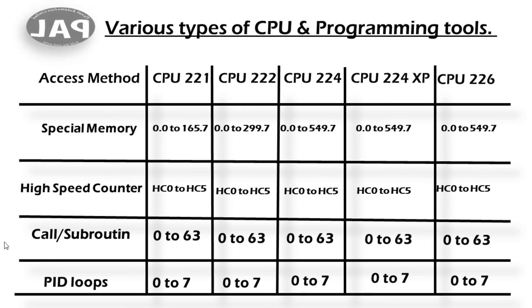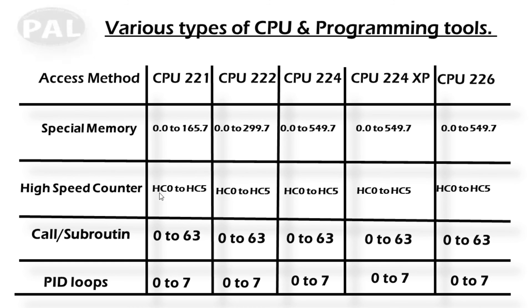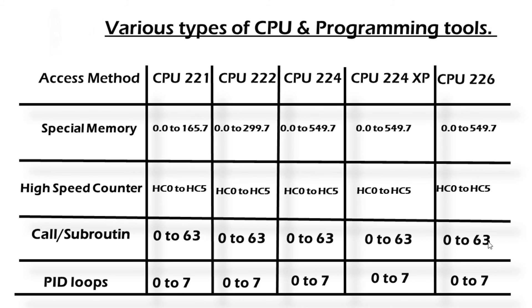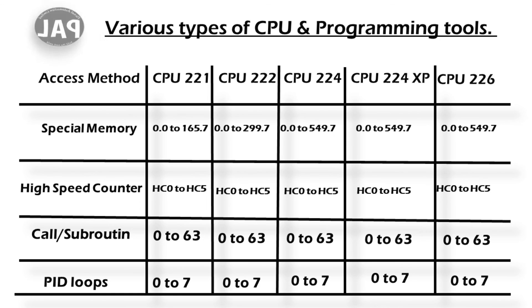High-speed counters in the S7-200 PLC are HC0 to HC5 — that means six high-speed counters, all the same across CPUs. Call subroutines — meaning the next page when you write your PLC programming — allows a total of 64 pages. PID loops: 0 to 7, meaning 8 PID loops, available for all kinds of CPU.